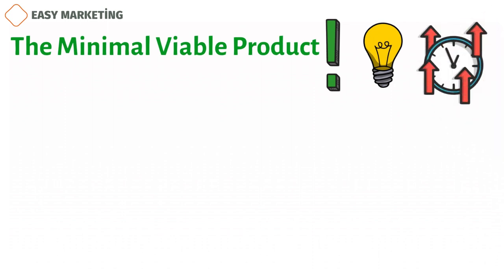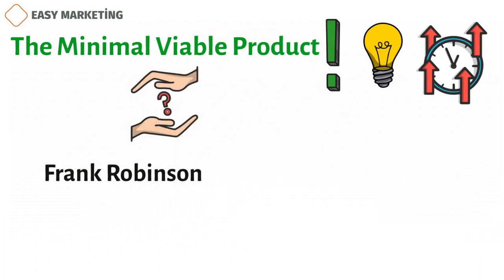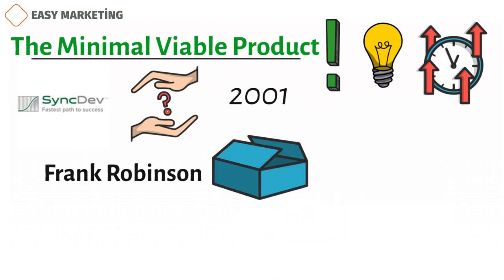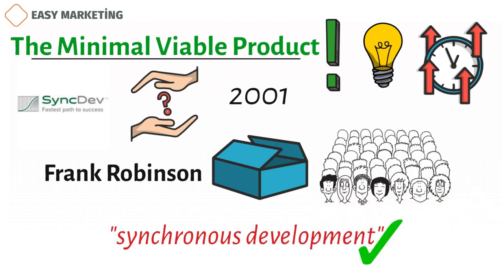What is a minimal viable product or MVP? Frank Robinson, the co-founder and president of SyncDev, came up with the term minimum viable product in 2001. He calls working on both the product and the client at the same time synchronous development. This is how an MVP is made.